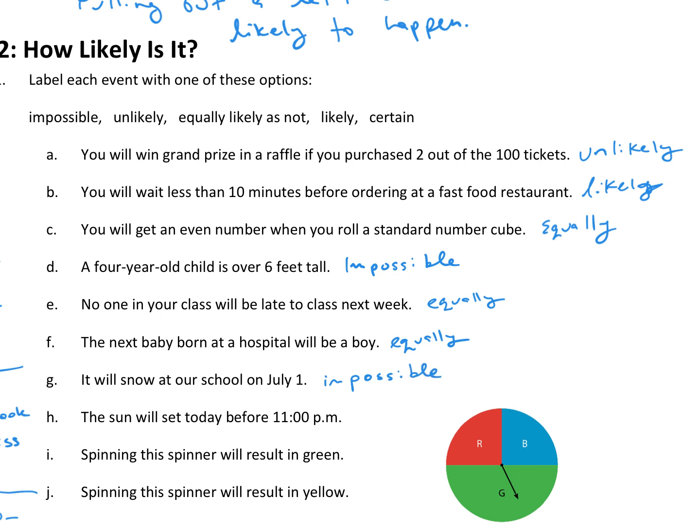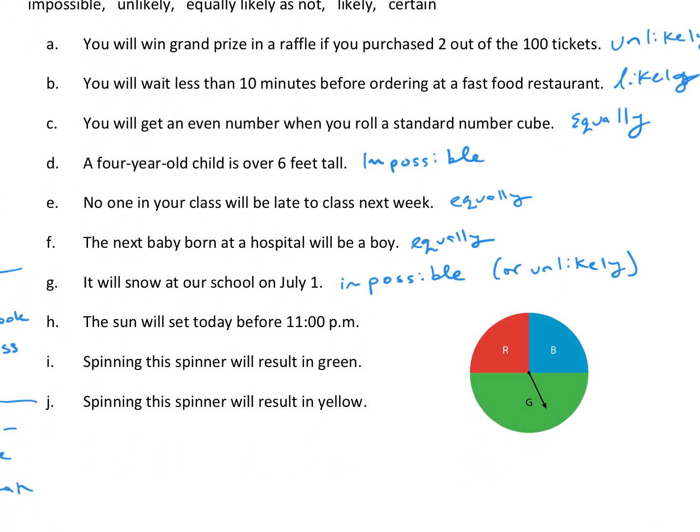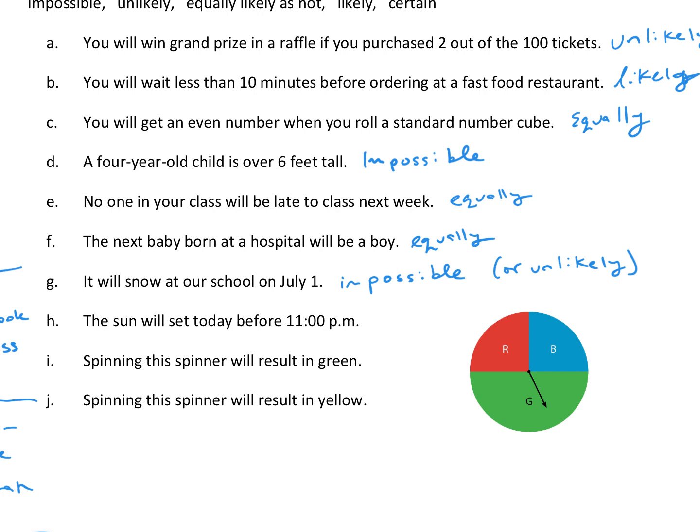You never know what the weather is going to be like. More than likely, it's not going to snow. Most likely, it's going to be impossible, but you never know. So, H, the sun will set before 11 p.m. today. That is definitely certain.